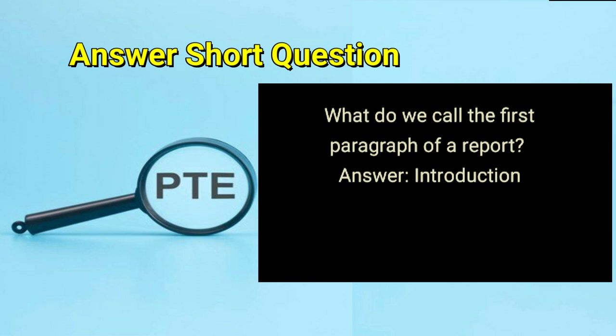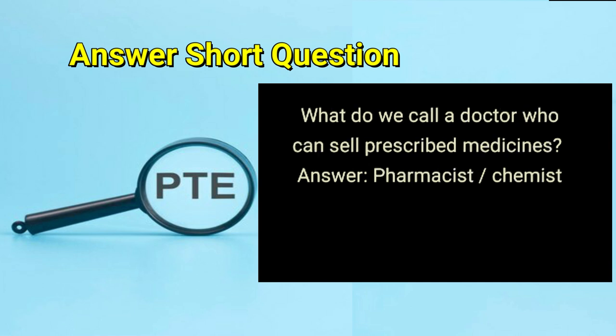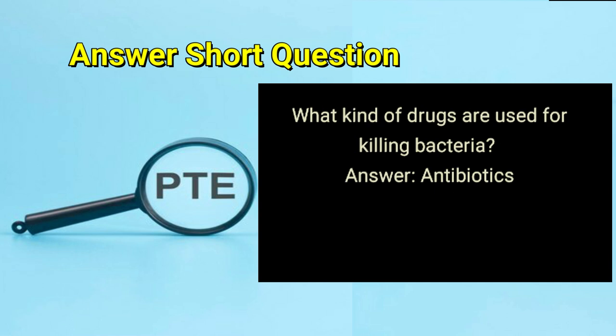What do we call the first paragraph of a report? Answer: introduction. What do we call a doctor who can sell prescribed medicines? Answer: pharmacist or chemist. What kind of drugs are used for killing bacteria? Answer: antibiotics.